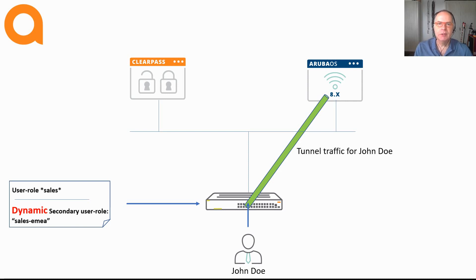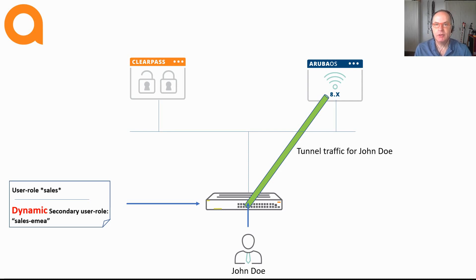The dynamic secondary user role feature is only supported with downloadable user roles, which really makes sense because for local user roles this isn't really applicable. With local user roles, only the role name attribute — the VSA — is pushed by ClearPass, so the switch is only aware of the static secondary user role. The use of the secondary user role is not mandatory. For each client you can decide whether to tunnel the traffic to an Aruba Mobility Controller or have the client break out onto the switch locally. This makes the application of this solution so flexible and easy.